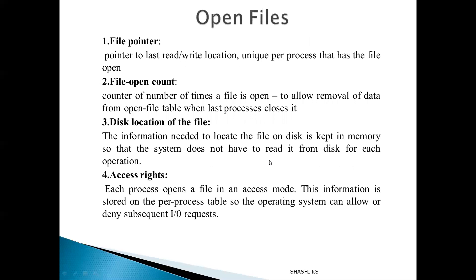All open files have four pieces of information associated with them. First is the file pointer, used to find the next read or write location — it is updated after every read or write operation to point to the next location. Second is the file open count, which keeps a list of all processes that have opened the file; when it reaches zero, the entry is removed from the open file table. Third is the disk location of the file, which facilitates easier retrieval when bringing the file from disk to memory.